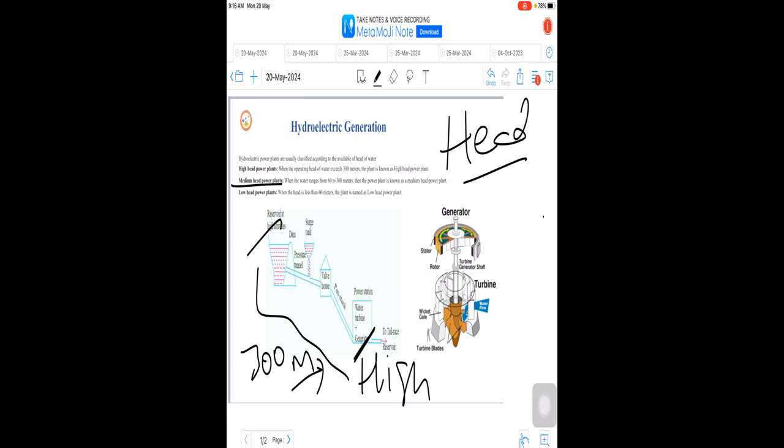Similarly, in medium head power plants, if this difference is 60 to 300 meters, they are called medium head power plants. Low head power plants are those where the difference is less than 60 meters. You can see in the block diagram of a hydroelectric generating station different components and parts. Let us understand each part's operation and how they are useful for the generation of electrical power.